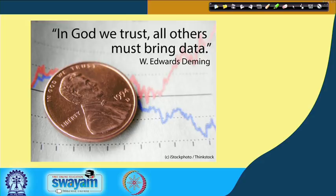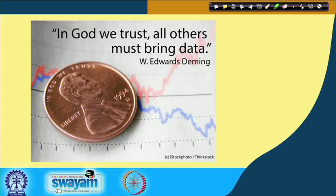Before we begin, let us see a beautiful quote by W. Edward Deming: 'In God we trust, all others must bring data.' We can have our intuitions, gut feelings, and instincts, but these will not work every time. The Six Sigma approach typically advocates the use of scientific inquiry and data. Not only data, but the quality of data is very important.